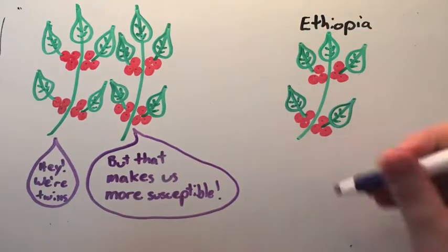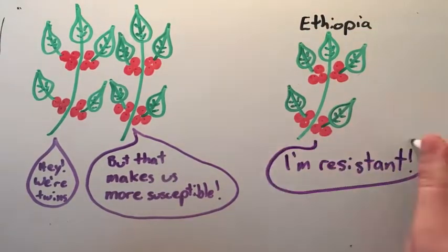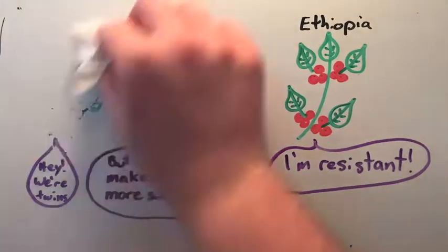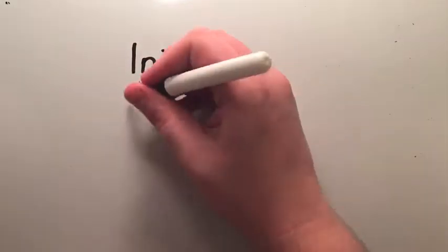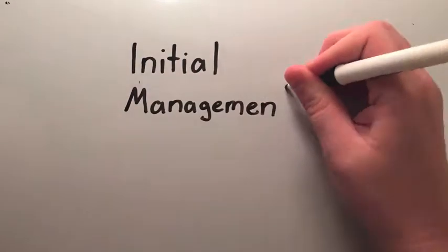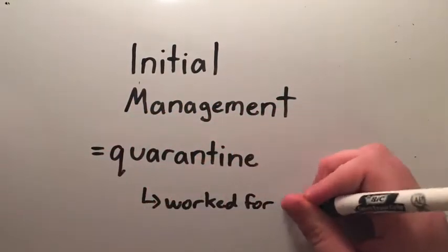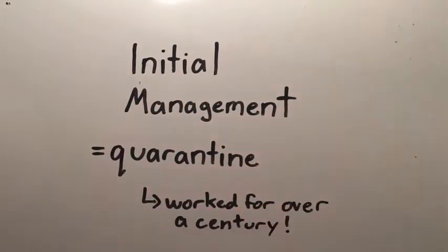Resistant genes from wild Ethiopian coffee varieties have had limited success because they end up decreasing coffee quality. Initial management techniques relied on quarantining diseased plants, which worked for over a century until the disease appeared in Brazil and spread too quickly to be contained.